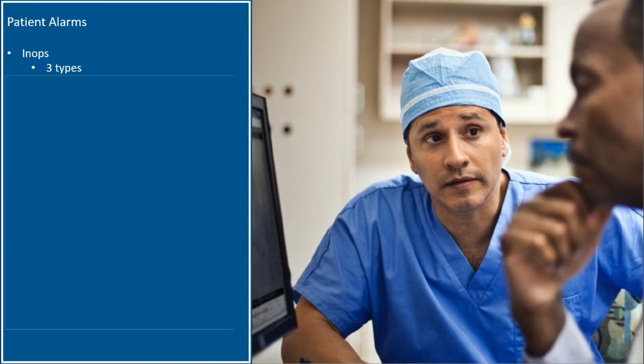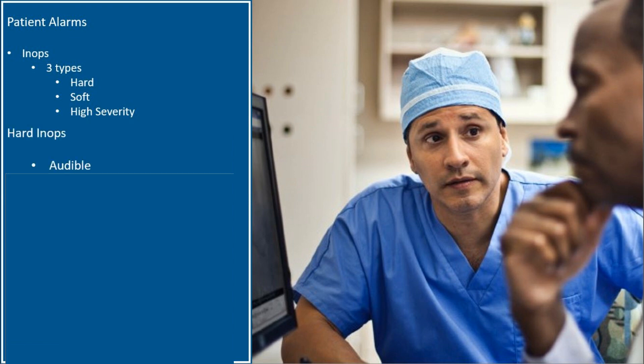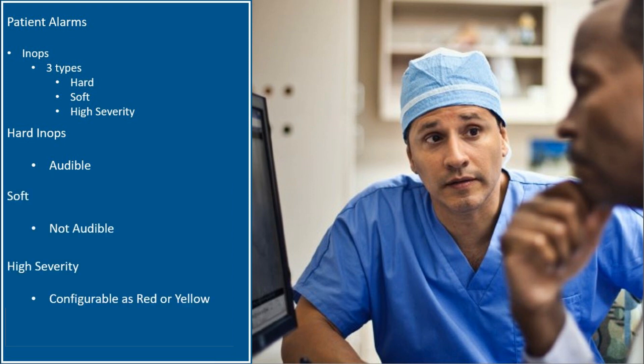There are three types of in-op alarms: hard, soft, and high severity. All three types indicate an inoperative condition. Hard in-op alarms are indicated audibly while soft in-ops are not. High severity in-ops can be configured as a red or yellow alarm and they will show in the banner with two or three exclamation points.